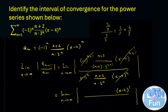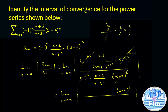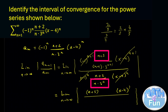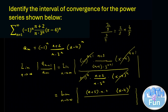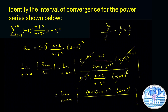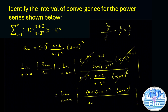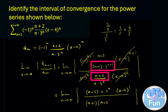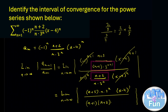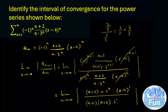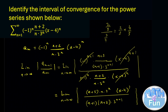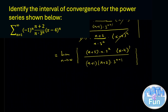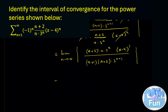So we multiply n plus 3 by n by 3 to the power n, over n plus 1 times n plus 2 times 3 to the power n plus 1. We can simplify further.